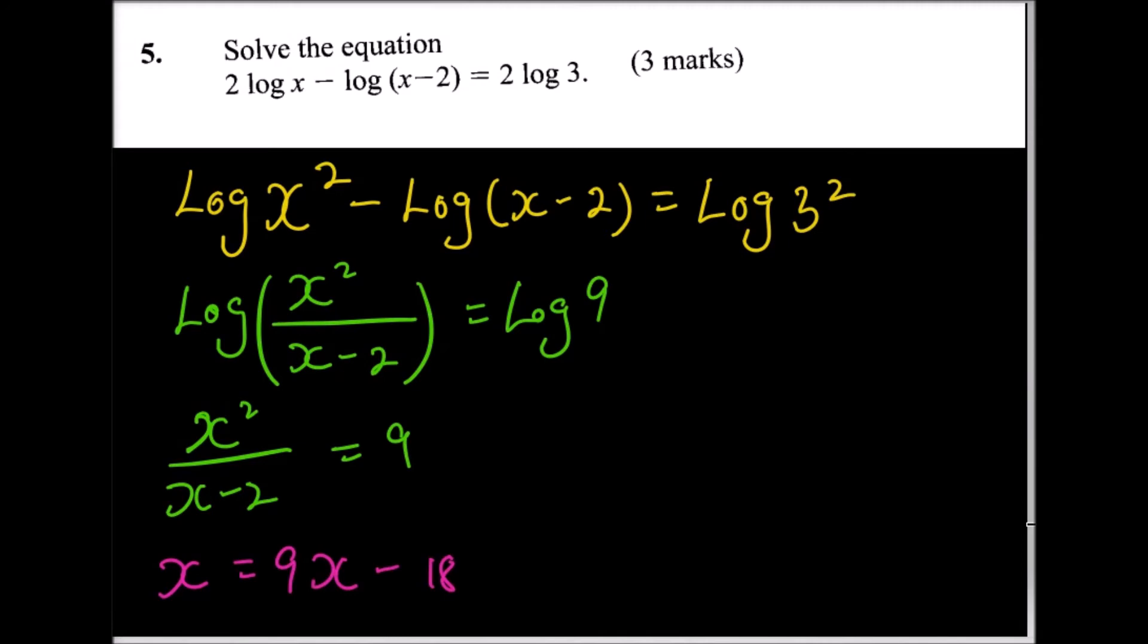rewrite our expression. We write x² minus 9x plus 18 equals zero. That is, you bring 9x and minus 18 to the left side. This is a quadratic equation which you can factorize.